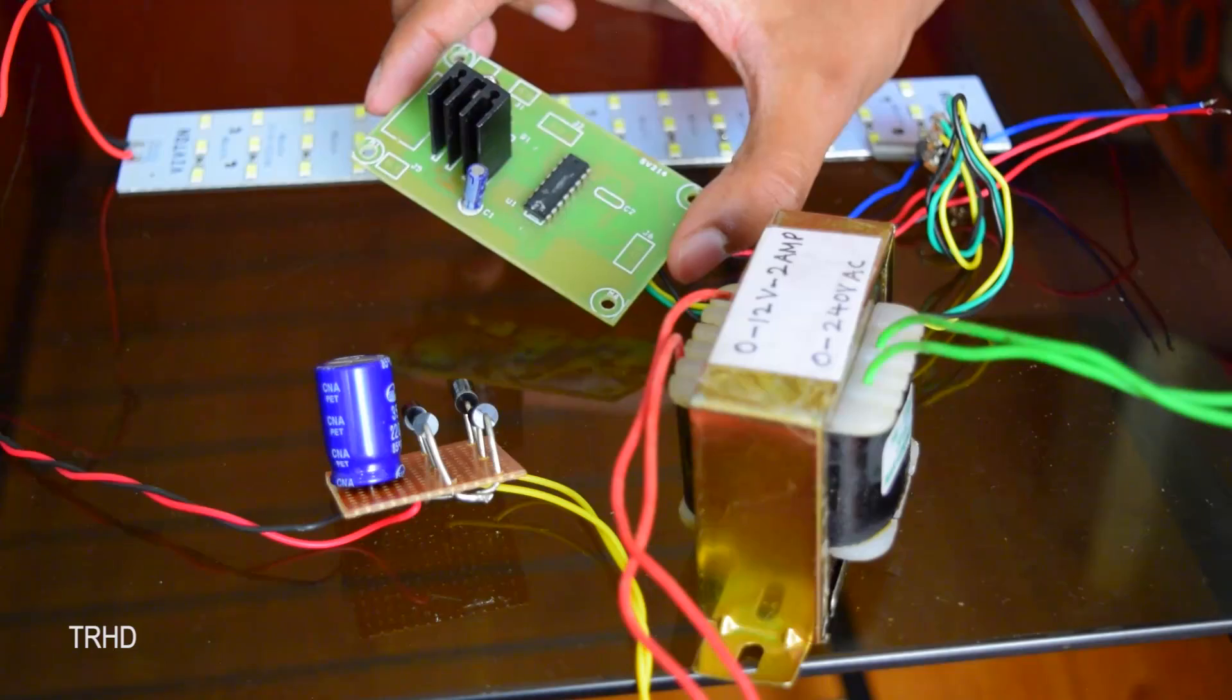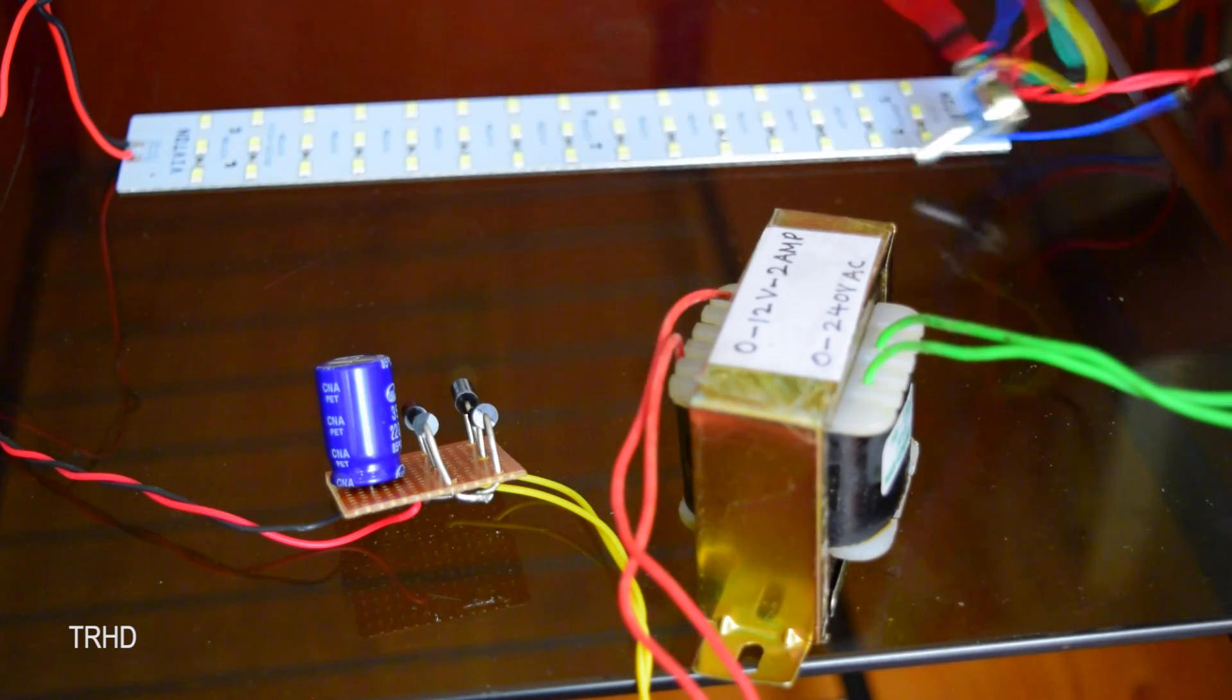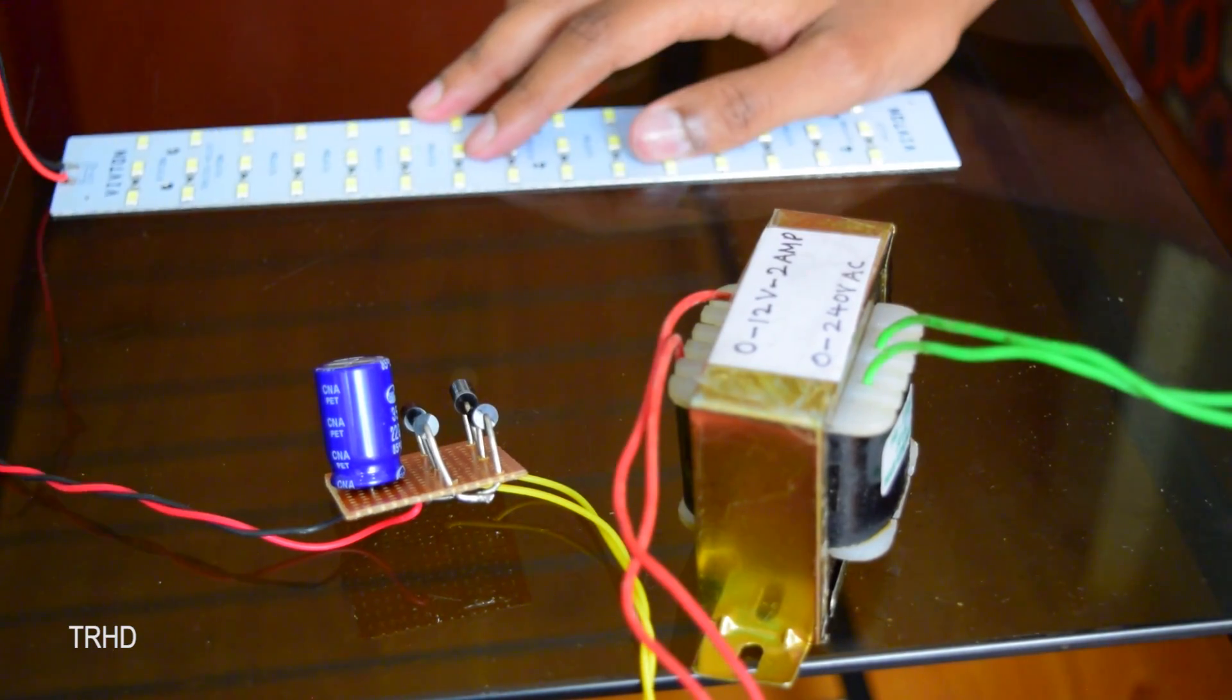If you don't want to use this brightness control circuit, you can just directly connect the power supply to this LED light strip like this.